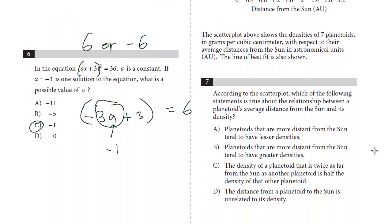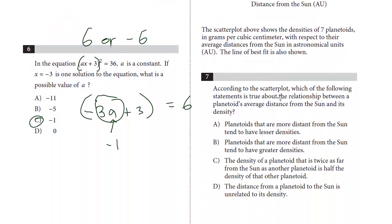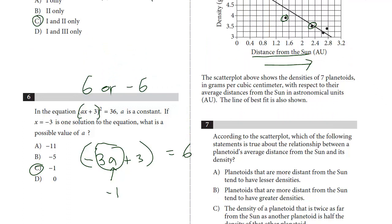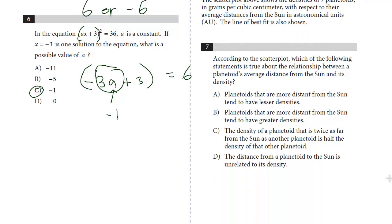According to the scatter plot, which of the following statements is true about the relationship between a planetoid's average distance from the sun and its density? And again, we know it has a negative slope. A: planetoids that are more distant from the sun tend to have lesser densities. This is a good answer. I mean, we see it has a negative slope. The farther the distance, as we move to the right on the x-axis, we know that the density decreases. So I would just select that. I think this definitely is true.